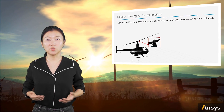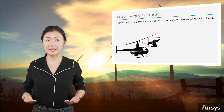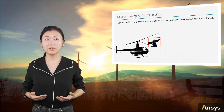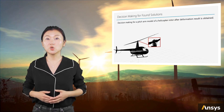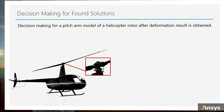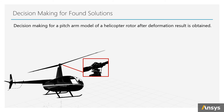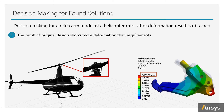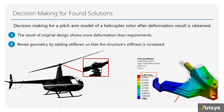Let's have a look at another example of engineering decision-making after results are obtained. The problem we are solving is the pitch arm of a helicopter rotor, which holds the blade in rotational motion. With boundary conditions and loads on the part, the maximum deformation result is about 0.46mm. If this amount exceeds the design requirements, an engineer needs to consider changing the design so that the deformation can be reduced under the same load. One way to do that is to add a stiffener to the arm so that the stiffness is enhanced. As you can see, the deformation result of the new design is reduced as expected.